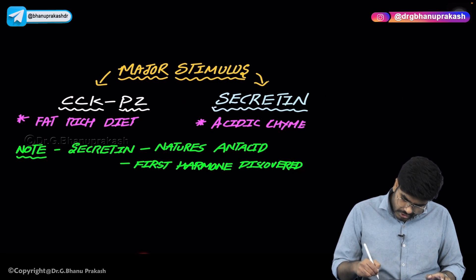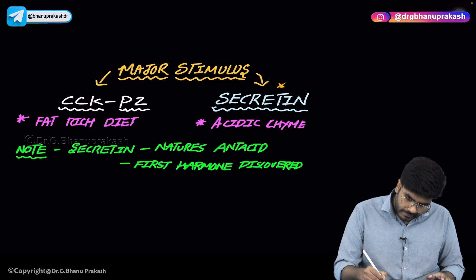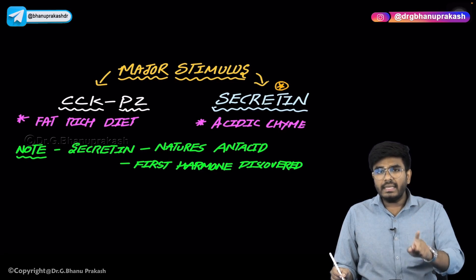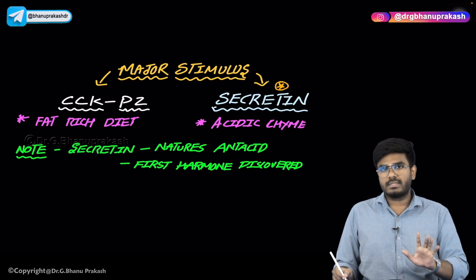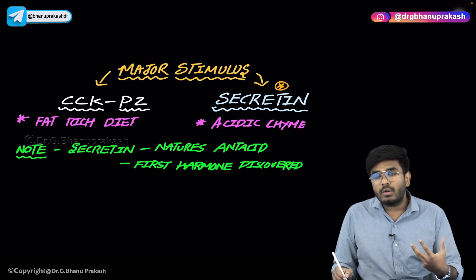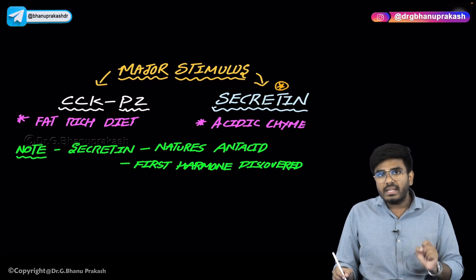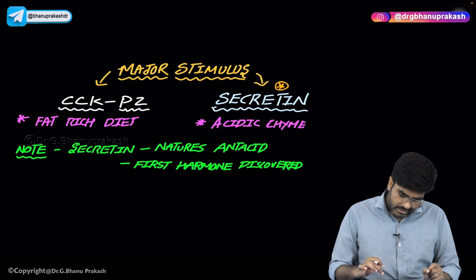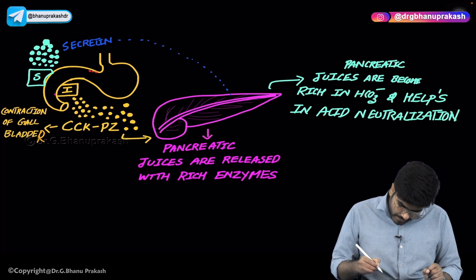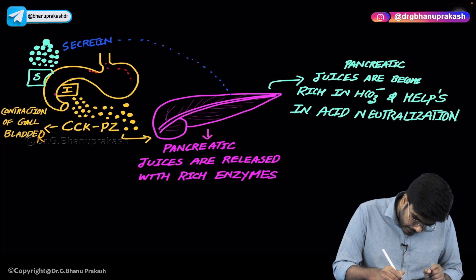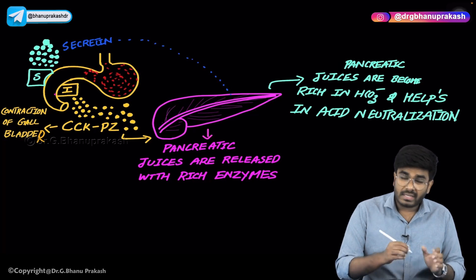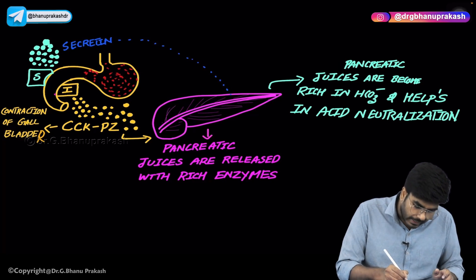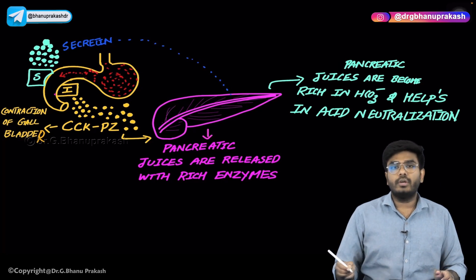What is the stimulus for the release of secretin? Secretin makes pancreatic juices rich in bicarbonates. The stimulus is acidic chyme. Whenever acidic chyme — partially digested food that is acidic — is produced in the stomach and reaches the duodenum, that triggers the S cells.